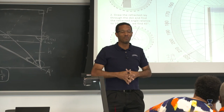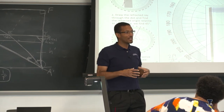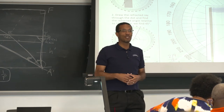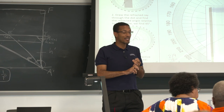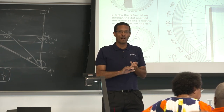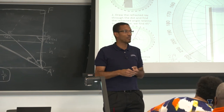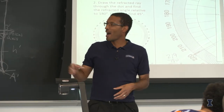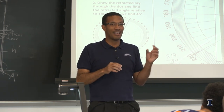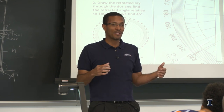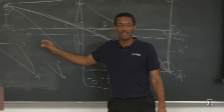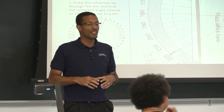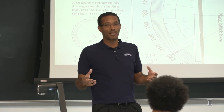Engineering design has three steps: define the problem, solve it, and improve through iteration. For this activity, the goal is to hold a flashlight, transparency, and lens in a way that creates a projector where the user can adjust the object distance and observe its effect on magnification and image-forming distance.